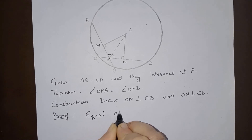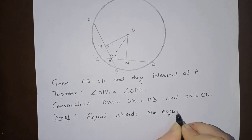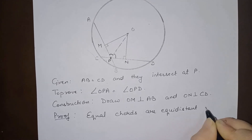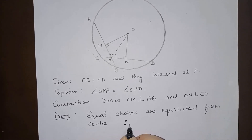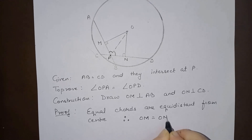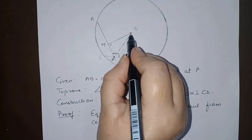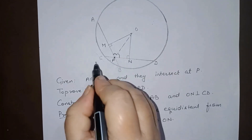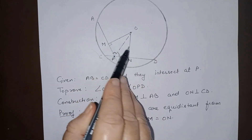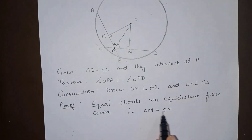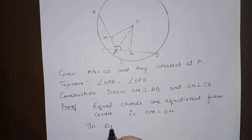Equal chords are equidistant from the center. Therefore OM is equal to ON. OM is perpendicular on AB, so it is the distance of AB from the center; ON is the distance of CD from the center. As AB and CD are equal, their distances from the center are also equal, so OM equals ON.